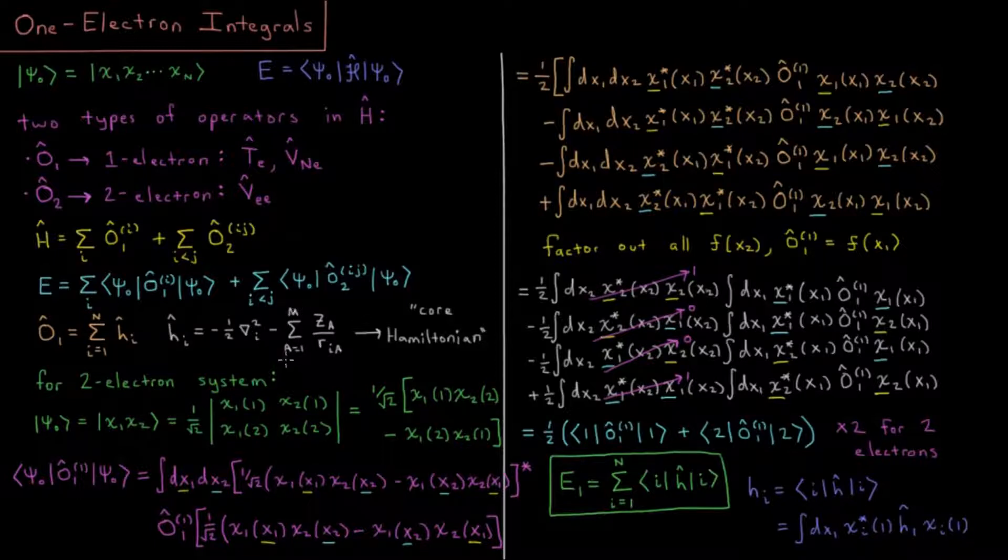Minus a sum from A equals 1 to m, a sum over all nuclei, all m of them indexed from 1 to m, of the number of protons or the charge of that nucleus Zₐ, divided by rᵢₐ, the distance from that electron to that nucleus.